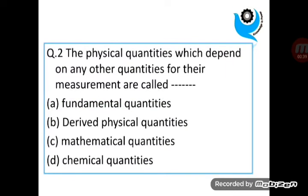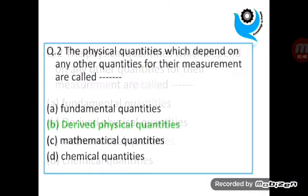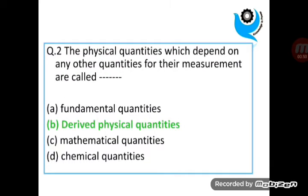Question 2. The physical quantities which depend on other quantities for their measurement are called Derived Physical Quantities.